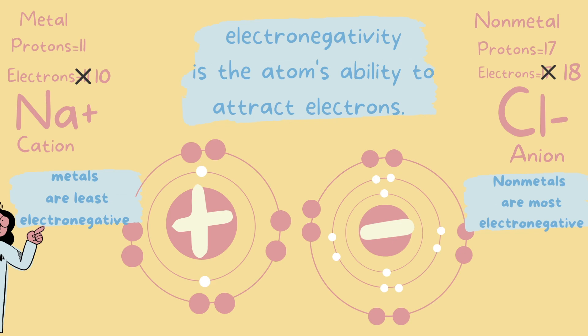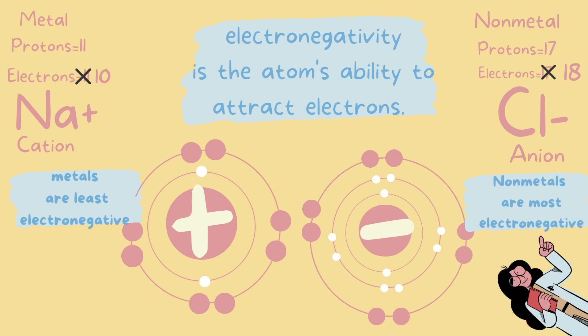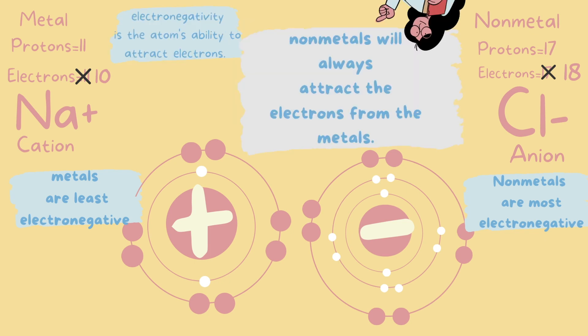Metals are generally least electronegative and non-metals are most electronegative. Because non-metals are more electronegative, they are better at attracting electrons towards them. So non-metals will always attract electrons from the metals — that's why they gain electrons and metals are the ones that lose electrons.